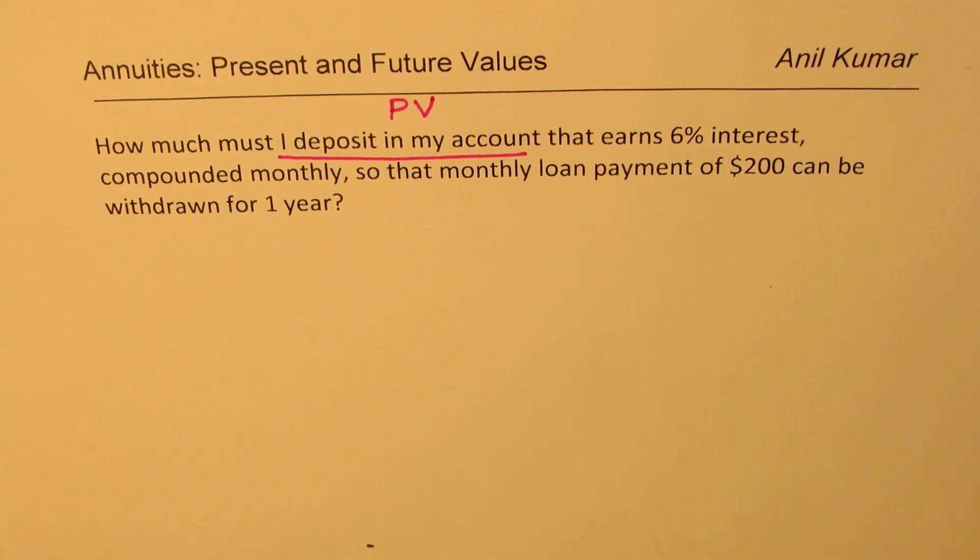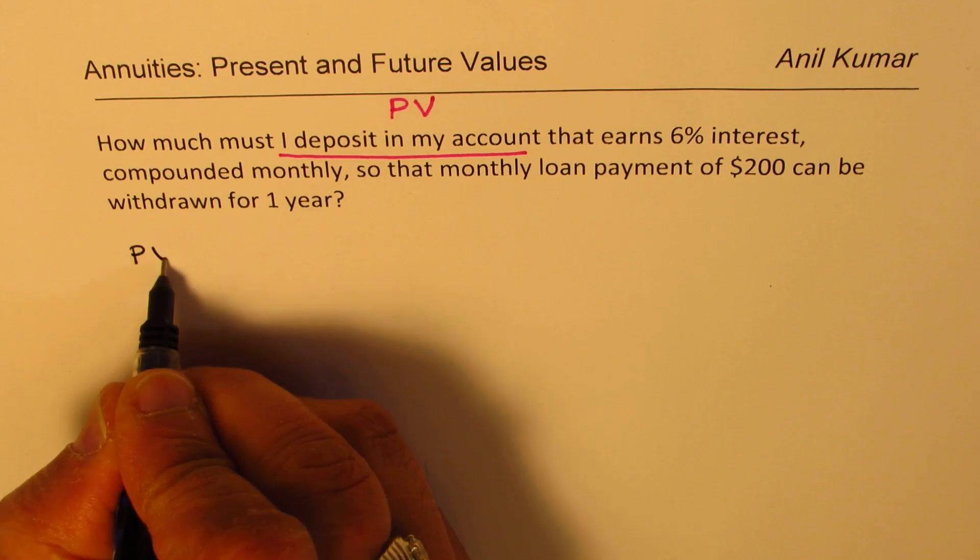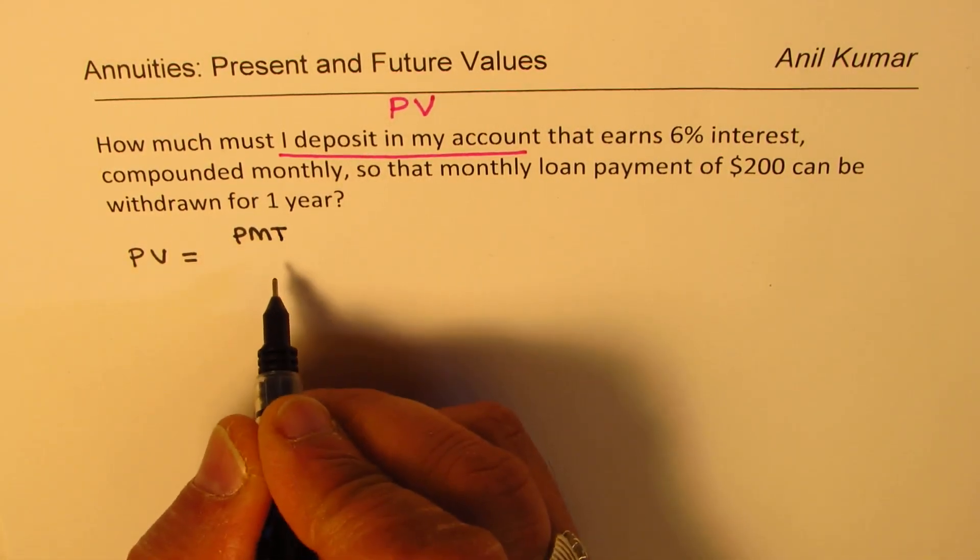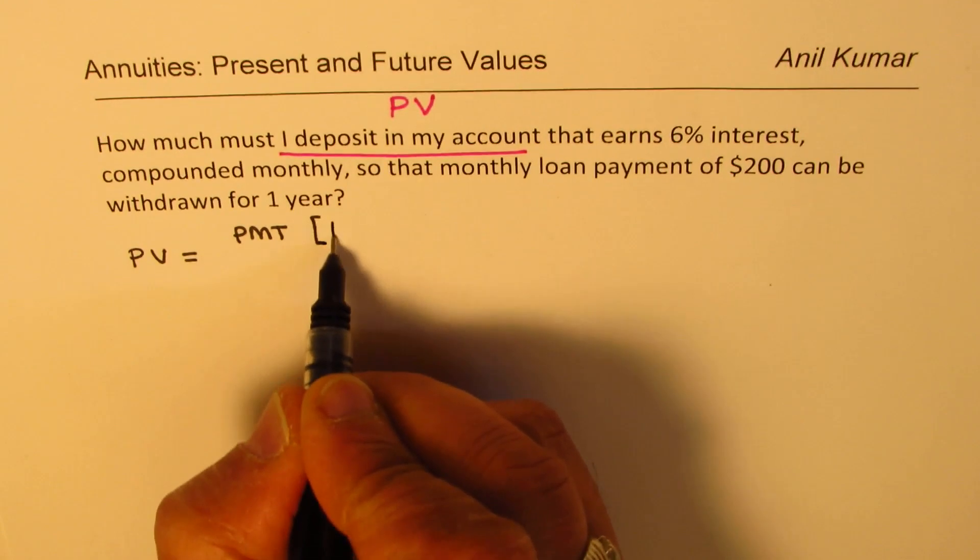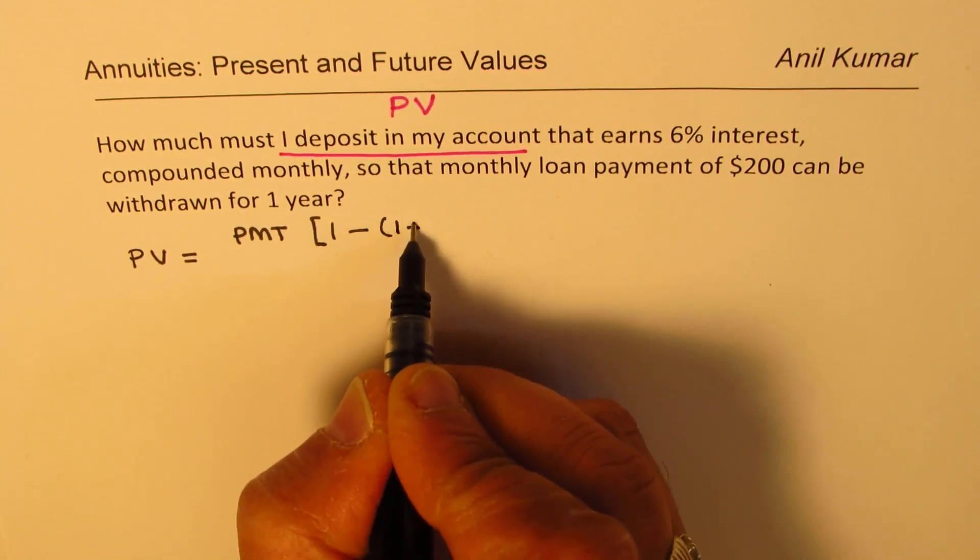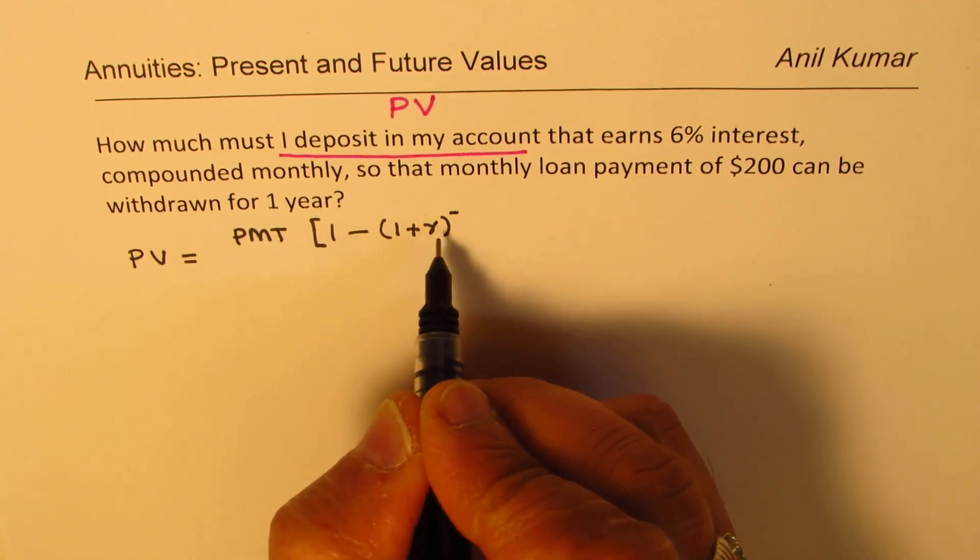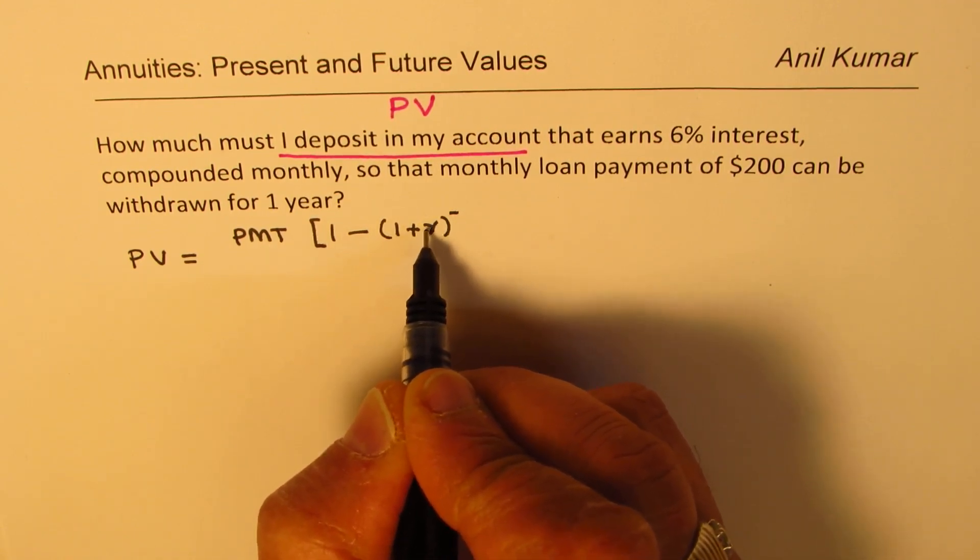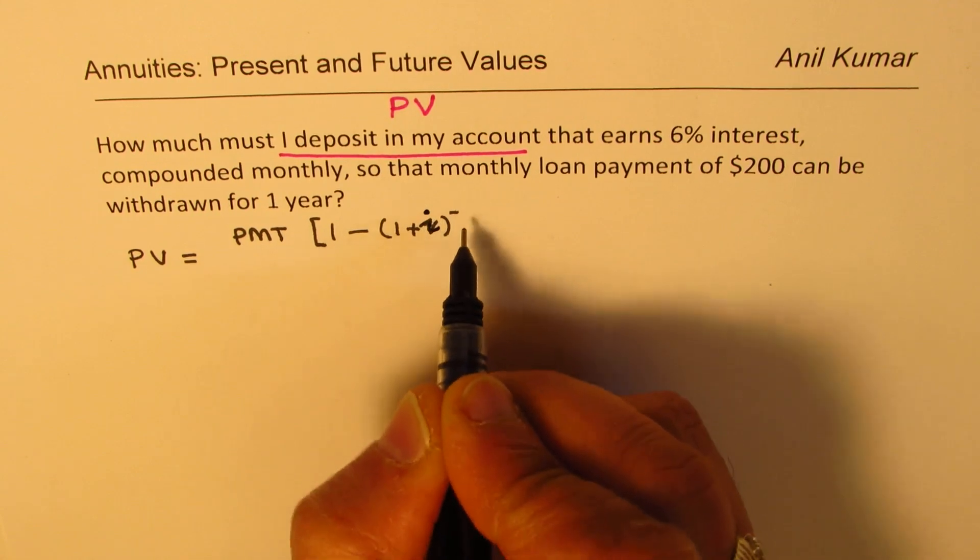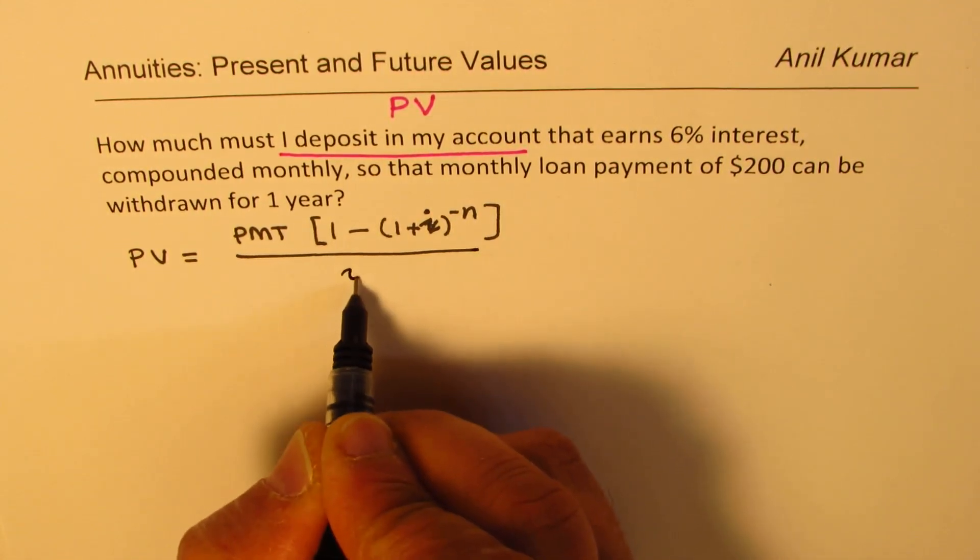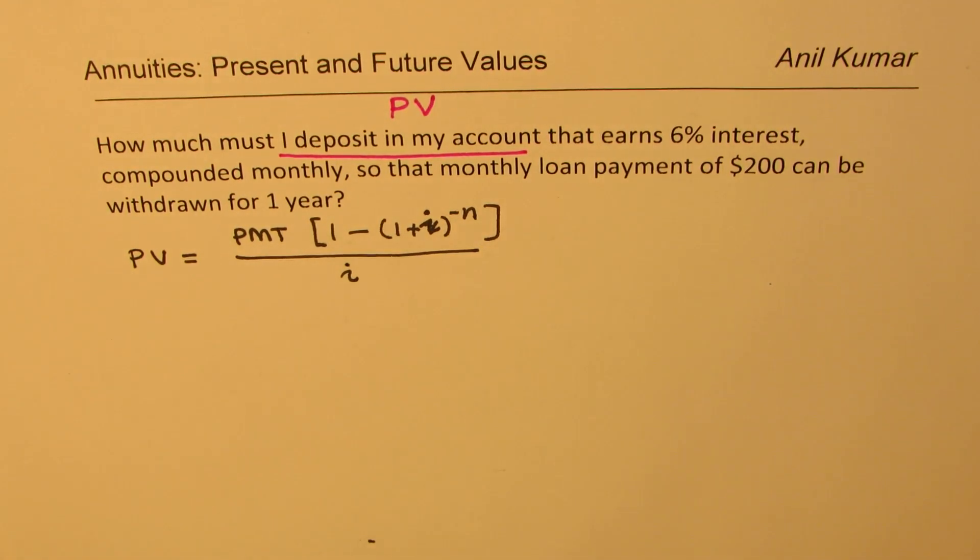Let's write the formula and what all is given to you. The present value formula is the monthly payments which you want to make, times 1 minus (1 plus rate of interest) to the power of minus n, divided by the interest rate i.